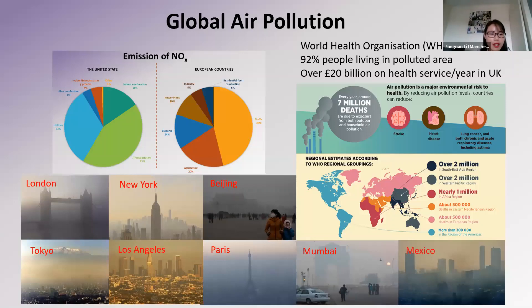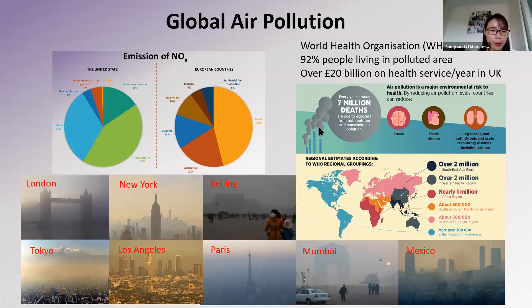The governments have to spend a huge cost on health services every year. Where does NO2 come from? Lightning and the decomposition of organisms are natural sources of NO2. But from government annual reports, nowadays human activities — especially transportation and fuel combustion — account for the main emission of NO2. So to improve the environment and human health, the removal of NO2 from exhaust gas is necessary.